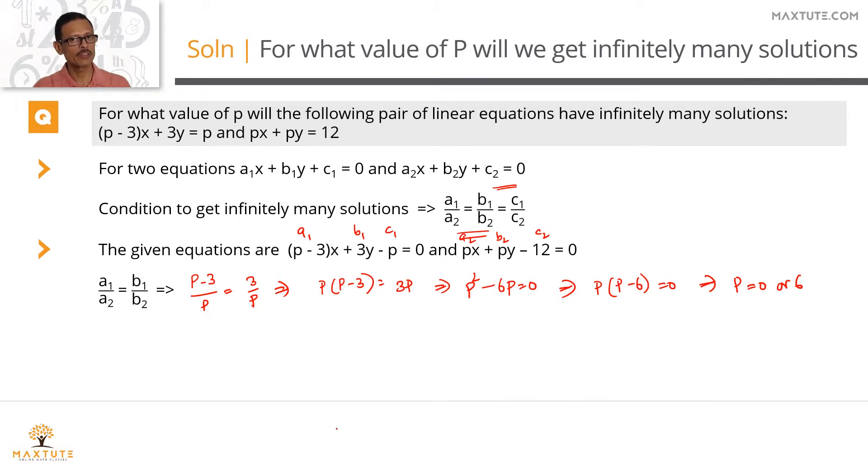Let's repeat the same exercise with b1 by b2 to be equal to c1 by c2. So b1 by b2 is 3 by p. This is equal to c1 by c2, which is minus p divided by minus 12. Minus p by minus 12 is nothing but p by 12. Cross multiply and solve for it.